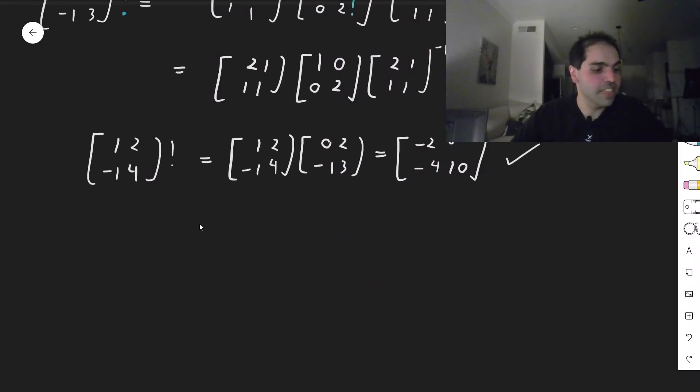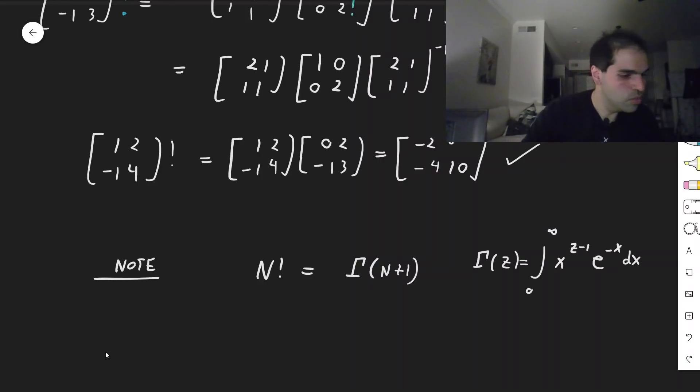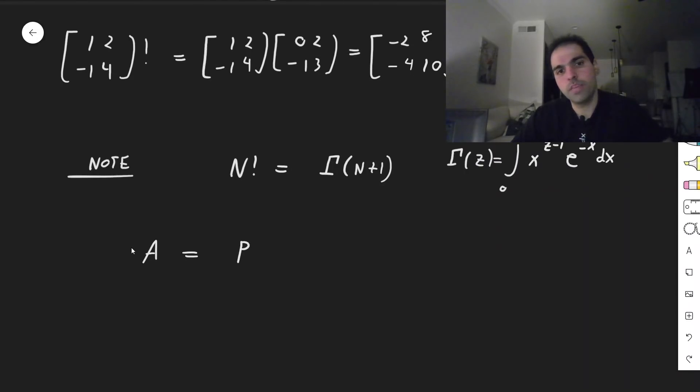Well, no problem. The only difference is, instead of using n factorial, you would use the continuous version of the factorial function, which is the gamma function. So in general, instead of using n factorial, you would use gamma of n + 1, where I would like to remind you, the gamma function is an integral from 0 to infinity of x^(z - 1) e^(-x) dx. So if, for instance, you have a matrix A, which is P [λ₁, 0; 0, λ₂] P inverse, then to calculate the factorial, you would put λ₁ factorial, λ₂ factorial, but instead of that, you would use the gamma function. So it would be P [Γ(λ₁ + 1), 0; 0, Γ(λ₂ + 1)] P inverse.